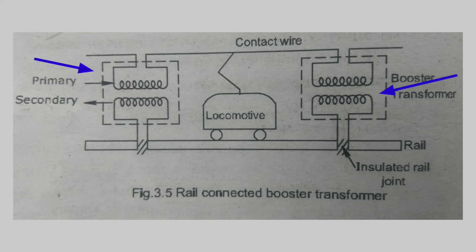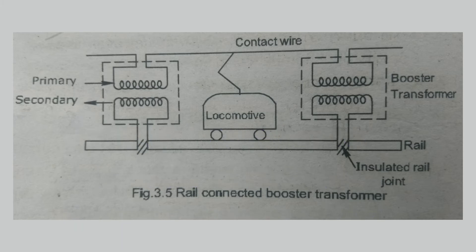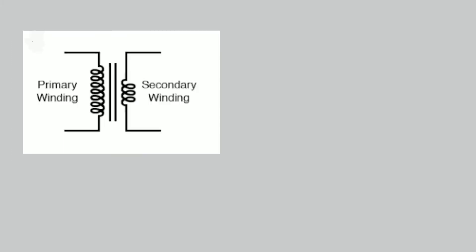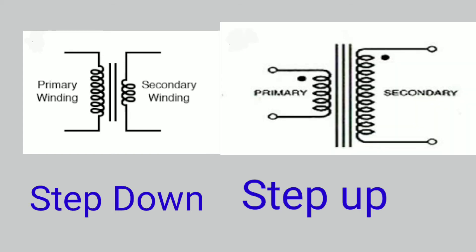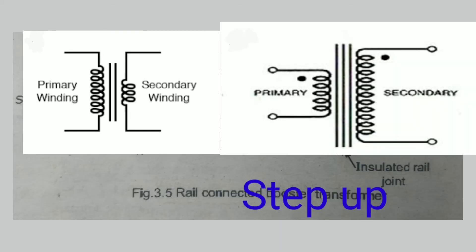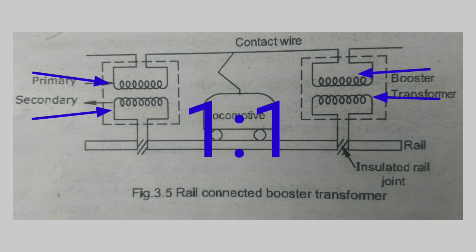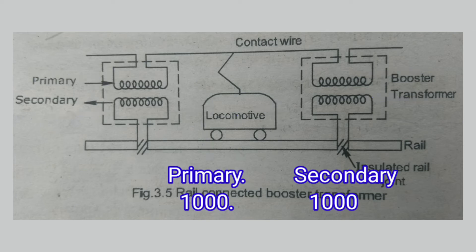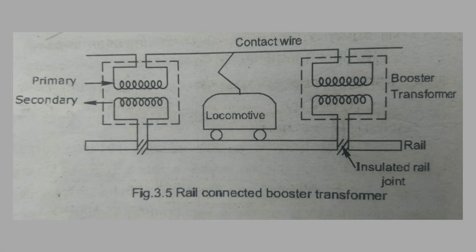To reduce this interference effect on the communication line, we use a Booster Transformer. In the transformer, we use a primary winding and a secondary winding with the same turns ratio. As used in an electric train system, the Booster Transformer has a one-to-one turns ratio — the transformer is one to one.